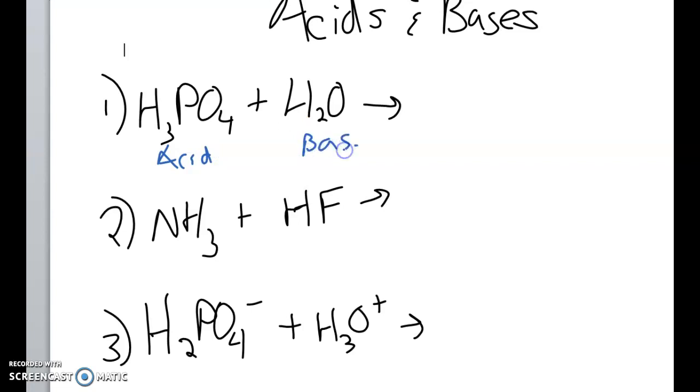Now predict the products of what's going to form from these two reacting. From the acid donating a proton, it's going to turn into H2PO4- because it lost an H+, and the water, that's the base, is gaining an H+, so it's going to turn into H3O+. Can you now label who the conjugate acid and who the conjugate base is?